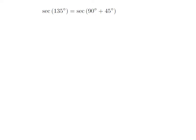As 135 degrees is equal to 90 degrees plus 45 degrees, so secant of 135 degrees is equal to secant of 90 degrees plus 45 degrees.